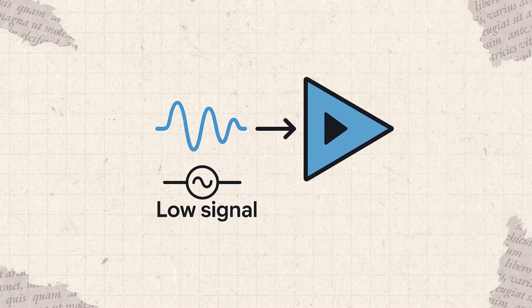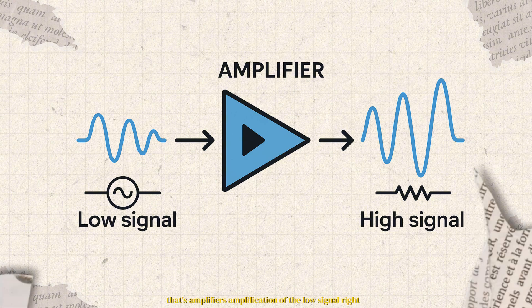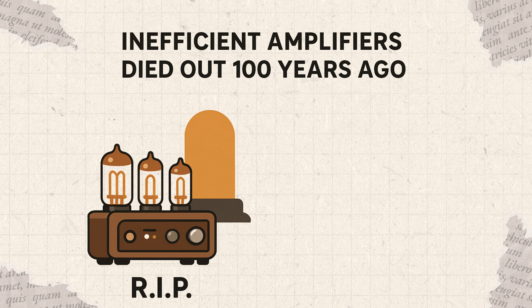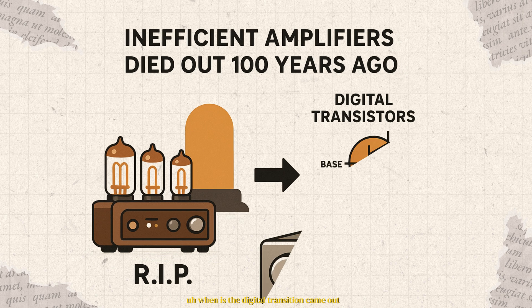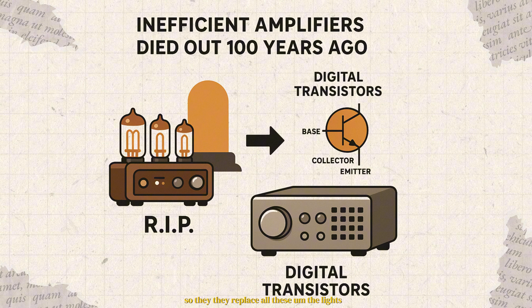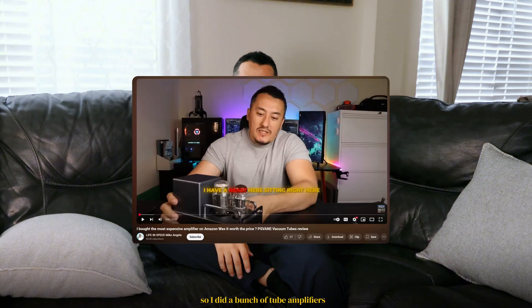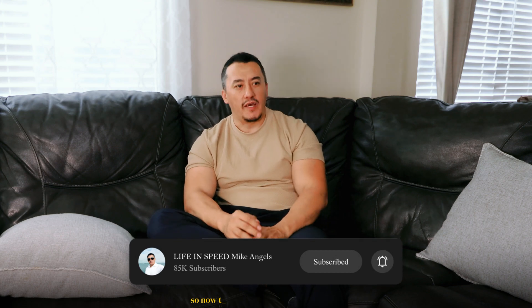All amplifiers take a small signal and give a bigger signal output — that's amplification of a low signal. Most amplifiers today are digital. Tube amplifiers from the early days were very inefficient and died out about 100 years ago when digital transistors came out and replaced the tubes. They're coming back though, and I've done a bunch of tube amplifier videos with more coming to the channel.